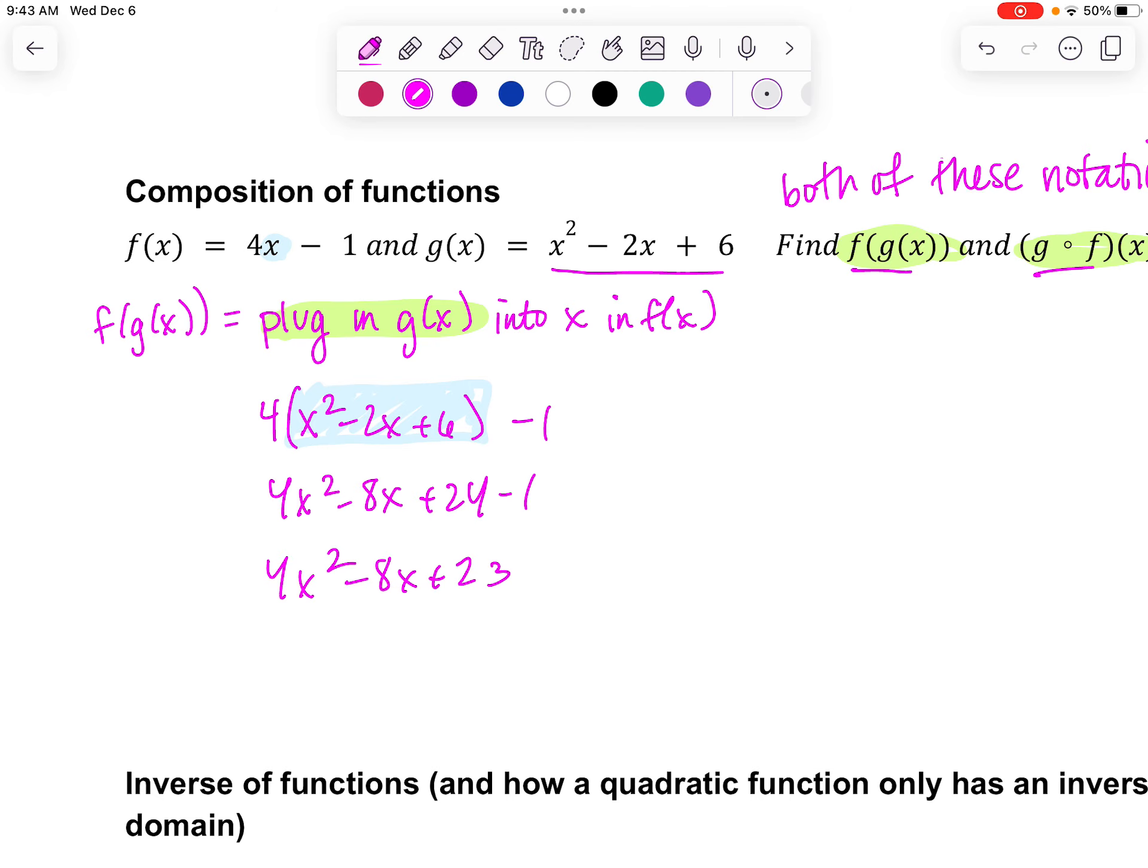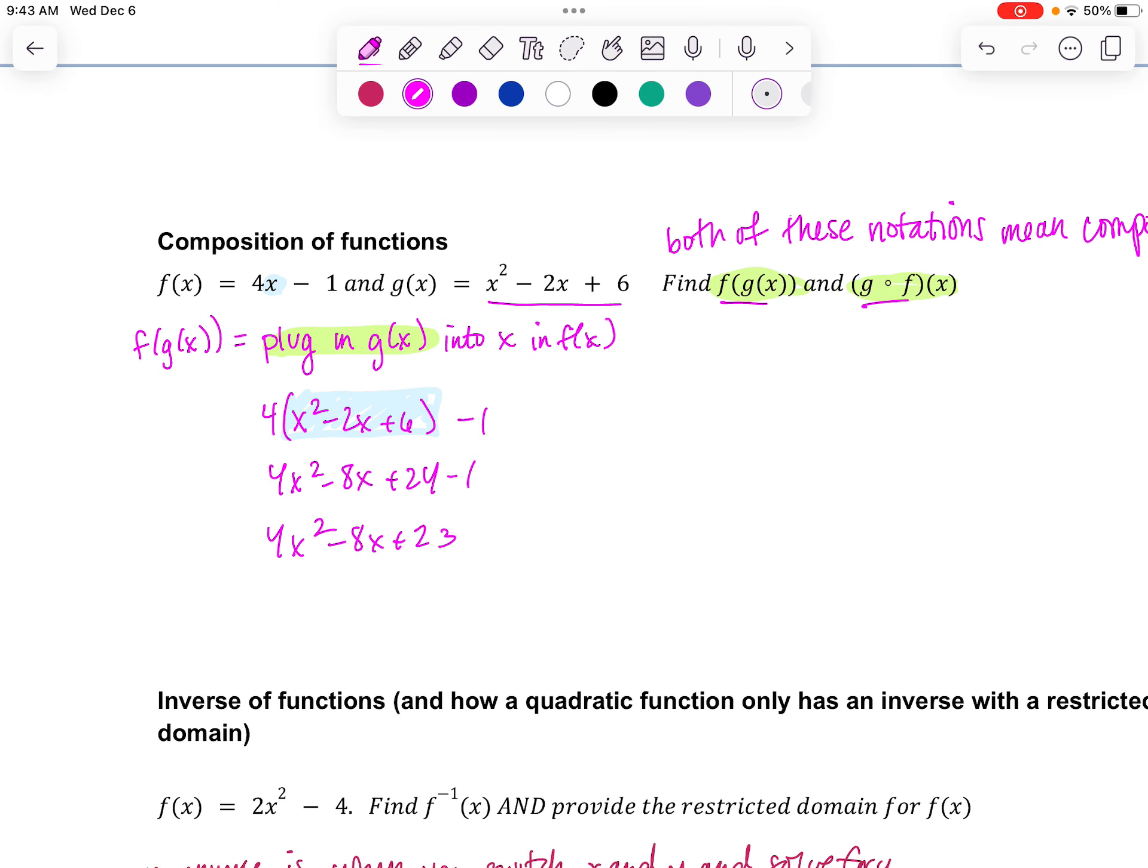All right, now if we look at the other one, g of f of x, this one's just a little bit more complicated because here I am taking this equation, 4x minus 1, and I'm plugging it in everywhere I see x. And you want to make sure that you use parentheses. So I'm going to have 4x minus 1 quantity squared minus 2 times 4x minus 1 plus 6. So we can see here I've plugged in that variable everywhere that an x was.